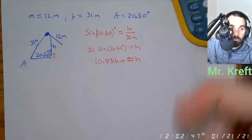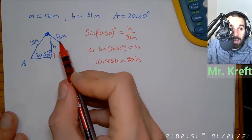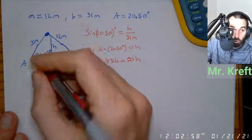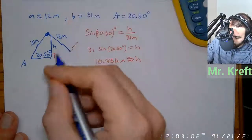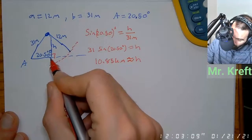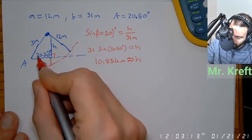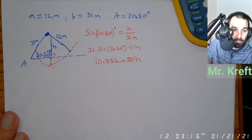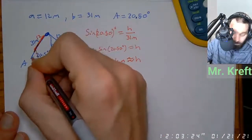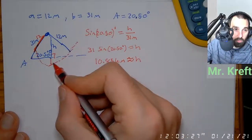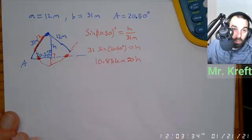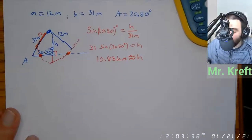I get 31 sine of 20.5, and my height is about 10.856 meters. That tells me A is longer than my height but shorter than B. So if it's longer than H but shorter than B, it's going to hit twice — we're going to have two triangles. We're going to have to solve two different triangles.